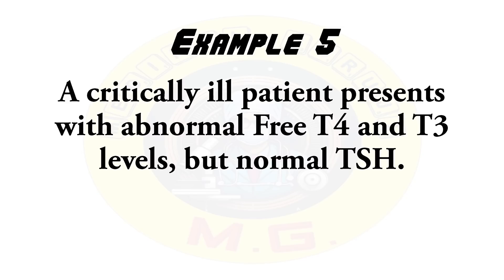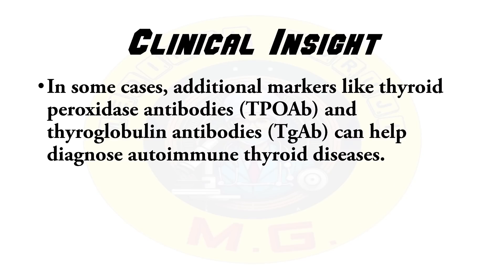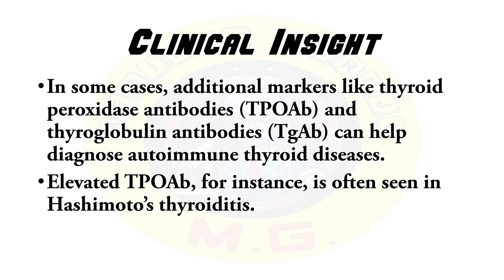In some cases, additional markers like thyroid peroxidase antibodies (TPO) and thyroglobulin antibodies (TgAb) can help diagnose autoimmune thyroid diseases. Elevated thyroid peroxidase antibodies are often seen in Hashimoto's thyroiditis.